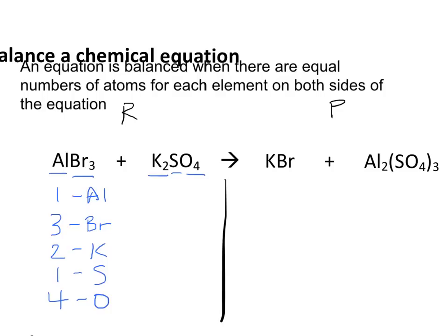And on my product side, I have two Aluminum atoms, one Bromine atom, one Potassium atom, three Sulfur atoms, and twelve Oxygen atoms.